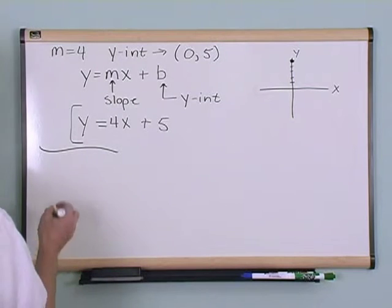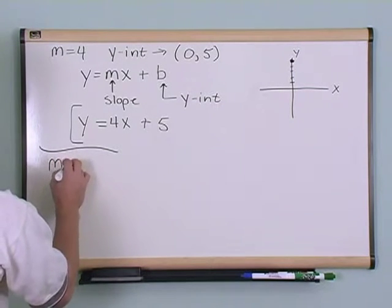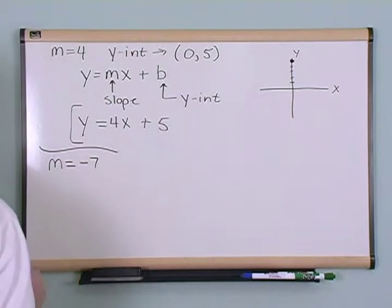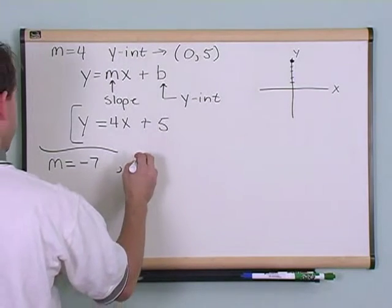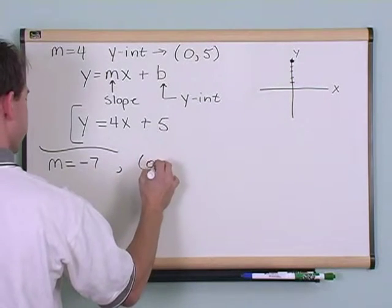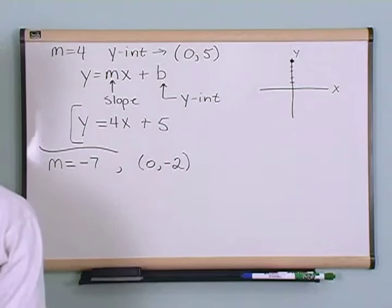So what if I gave you a little bit different piece of information. Let's say the slope is equal to -7 and the y-intercept is given by -2. The y-intercept is given to be -2.